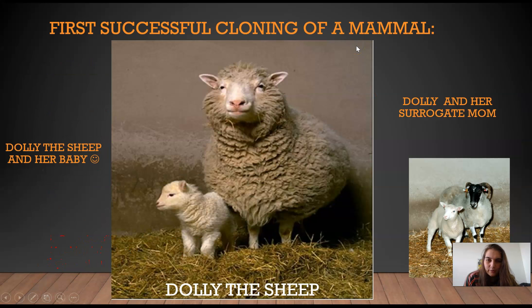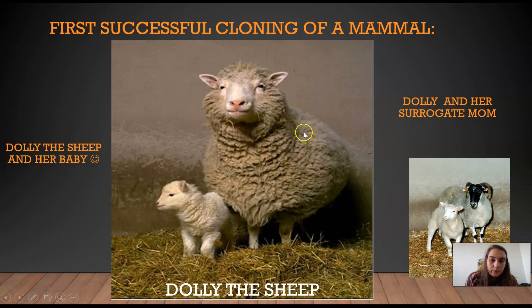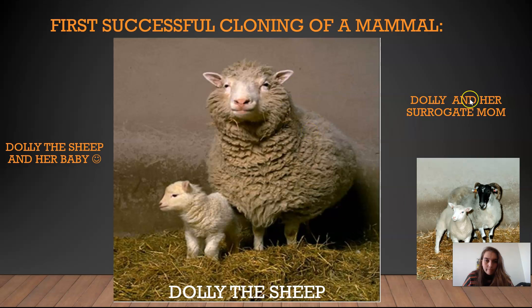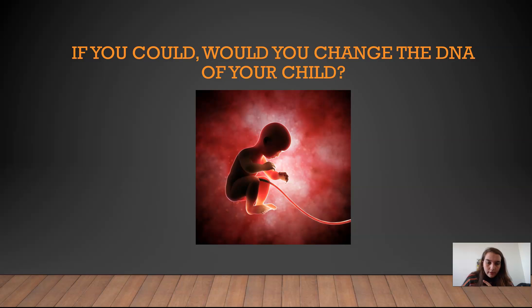As a fun side note, this was the first successful cloning of a mammal. Her name was Dolly — she was a sheep cloned in 1996. This is her with her surrogate mom, the sheep that gave birth to her but was not her actual mother, because Dolly is a clone of another sheep altogether. People were really excited and really freaked out at the same time. This brings up a question: if you could, would you change the DNA of your child? Think about what it would mean — maybe make them taller, stronger, or take away diseases you know they might have. Start thinking about that because it will come back up later.